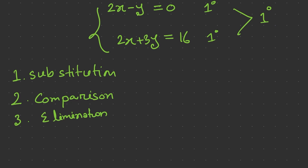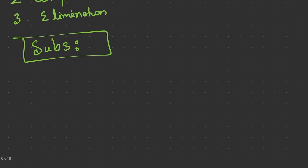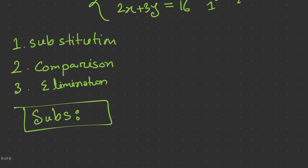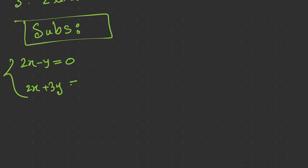We'll go through each method step by step and discuss when it's best to use each one. Starting with substitution — our equations are 2x minus y equals 0 and 2x plus 3y equals 16.